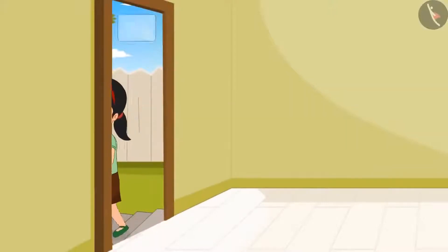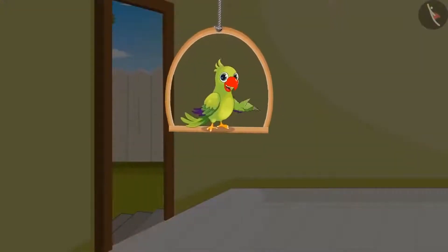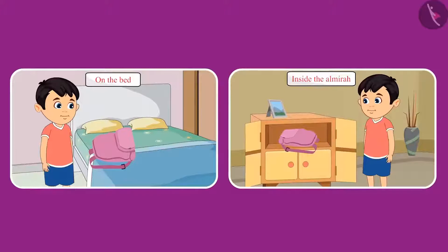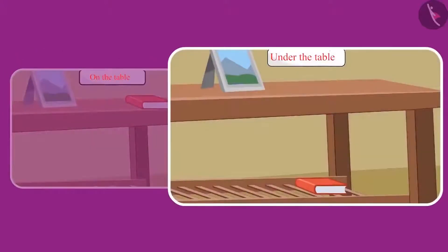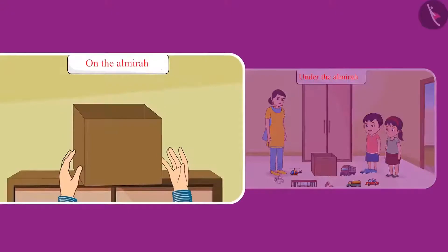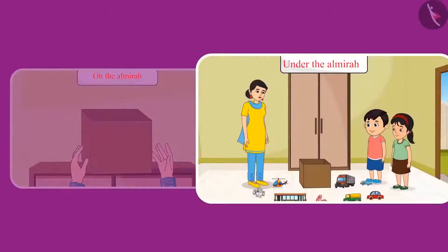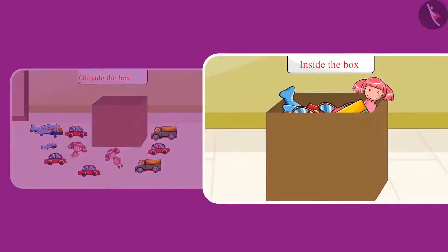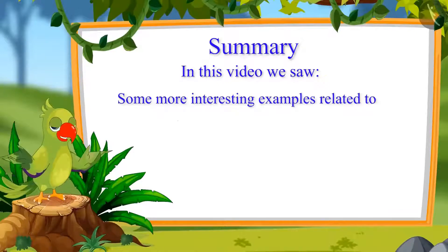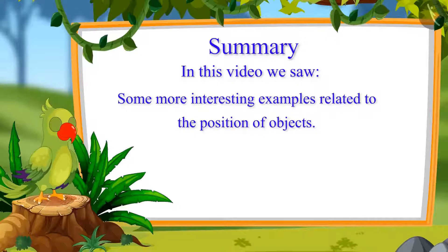Then both of them went out to play. Children, did you see how Pinky and Chotu changed the position of different objects while cleaning the rooms? Like picking up the notebook from the table and placing it under the table, and the toy box was on top of the almira. Chotu and Pinky picked all the toys which were lying outside the box and kept them inside the box.